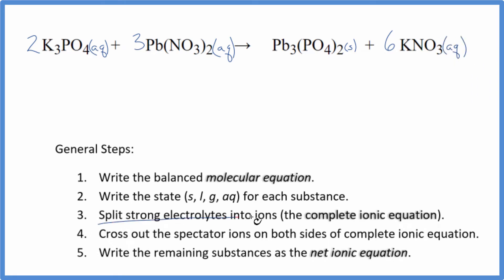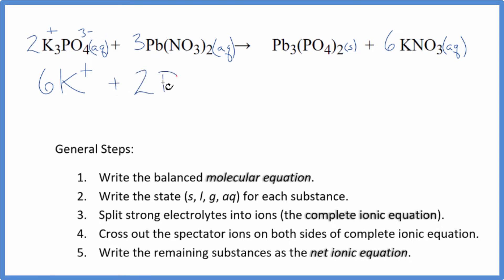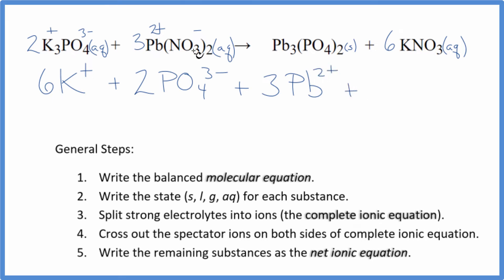Once we have the states, we can split the strong electrolytes into their ions for the complete ionic equation. Potassium on the periodic table is 1 plus; the whole phosphate ion is 3 minus — good one to remember. So 2 times 3 gives 6 potassium ions. Lead-2 phosphate has phosphate ions with a 4, 3 minus charge. Lead is a transition metal, so we can't tell its charge without looking at what it's bonded to. Since the nitrate ion is 1 minus and we have 2 of them, the lead has to be 2 plus. So we have 3 lead(2+) ions and 3 nitrates times 2 gives 6 nitrate ions.